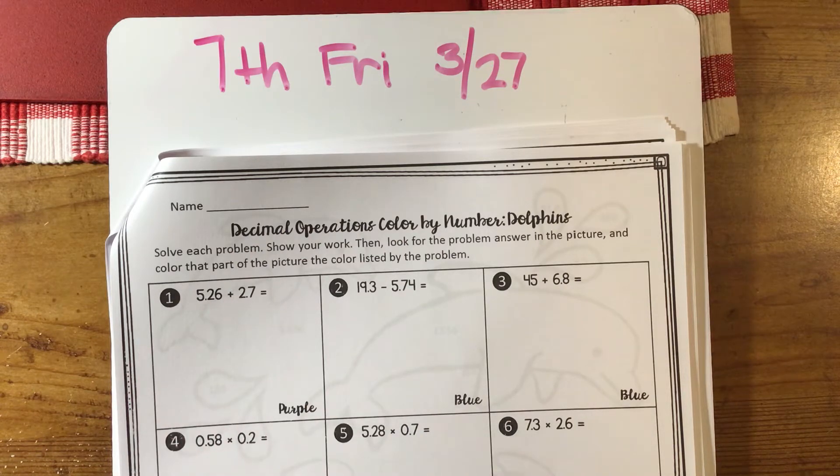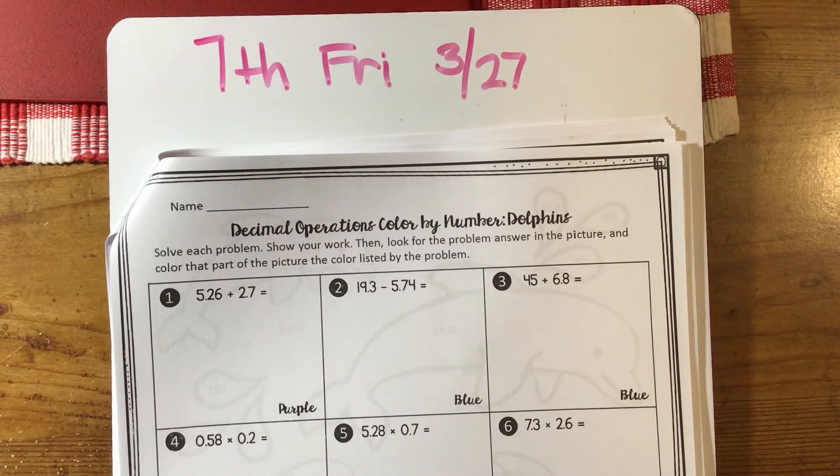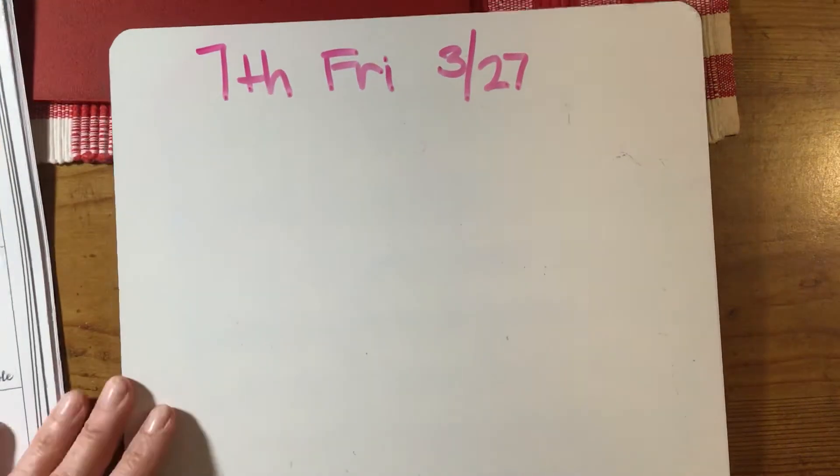This is a review. We did some of these decimal operations last week in our last packet. When you're adding or subtracting decimals, you want to line up the decimal. I'm going to do a couple of those for you—one adding, one multiplication, and one division—and then I'll put some of these on Google Classroom for you guys to work out. I'm going to use number one from your packet.